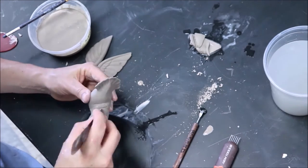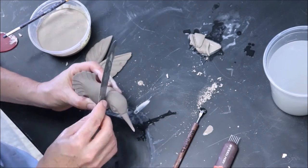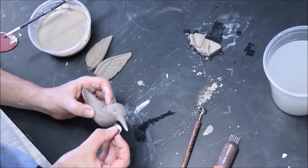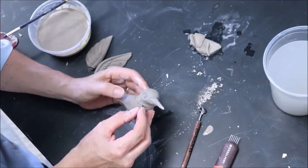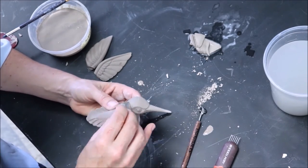Joinery slip is simply clay mixed with water until it becomes runny, and we use this slip to join two pieces of leather hard clay together, sort of like glue. This is not the kind of slip we use when slip casting.